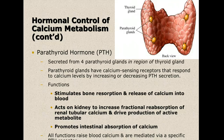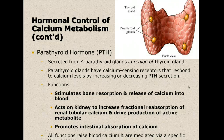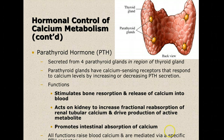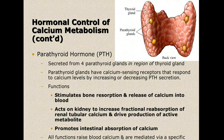Another hormone that helps control calcium is parathyroid hormone. There are four parathyroid glands embedded in the thyroid gland. Parathyroid hormone is secreted from those four glands and they have calcium-sensing receptors that respond to calcium levels by increasing or decreasing parathyroid hormone secretion. It stimulates bone resorption and release of calcium into the blood, acts on the kidney to increase reabsorption of renal tubular calcium, drives production of active vitamin D metabolite, and promotes intestinal absorption of calcium. All these functions raise blood calcium and are mediated by a specific parathyroid hormone receptor.